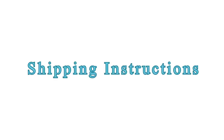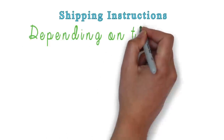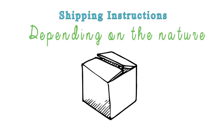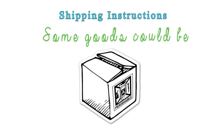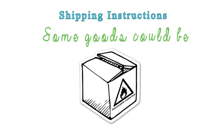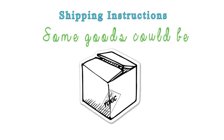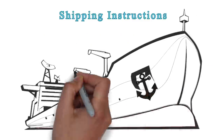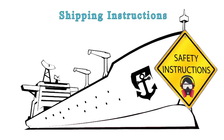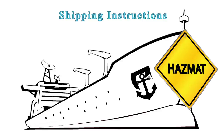Shipping Instructions: Depending on the nature of the goods, they must be shipped under specific instructions. Some goods could be perishable, flammable, corrosive, biohazardous, toxic, pathogenic, or allergenic. They have to be shipped under appropriate safety instructions as per various international conventions like HAZMAT, IATA, FIATA, SOLAS, etc.